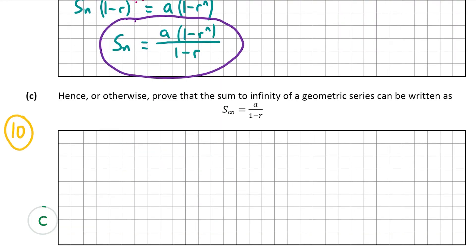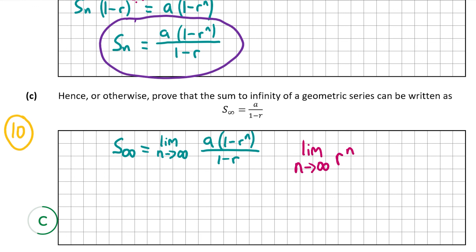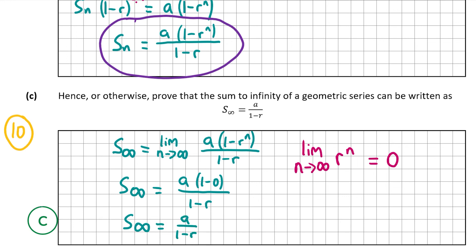Now for part c, also worth 10 marks: prove that the sum to infinity of a geometric series can be written as S∞ equals a over (1 minus r). To prove this, we take the limit as n tends to infinity of the sum formula. The only term containing n is r^n, and as n tends to infinity, r^n tends to 0. This leaves S∞ equals a times (1 minus 0) over (1 minus r), which simplifies to a over (1 minus r). Therefore S∞ equals a over (1 minus r), and that's our answer for part c and the end of the video. Thank you very much for watching.